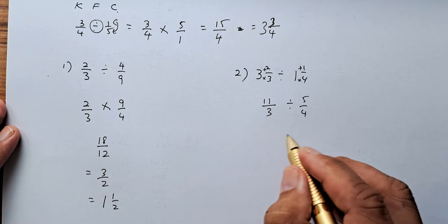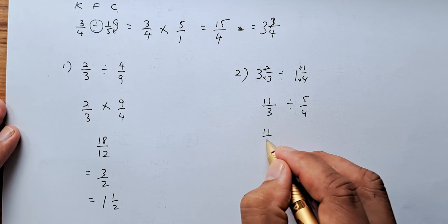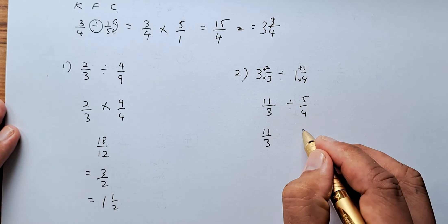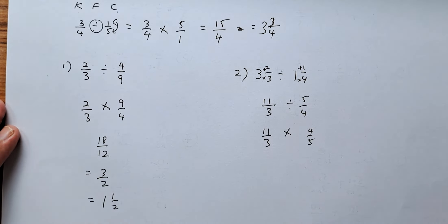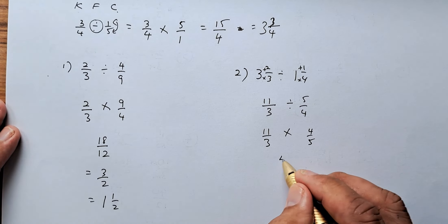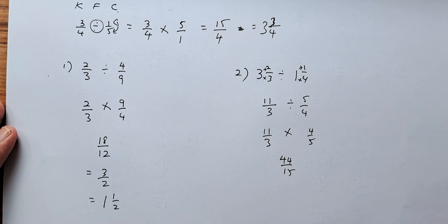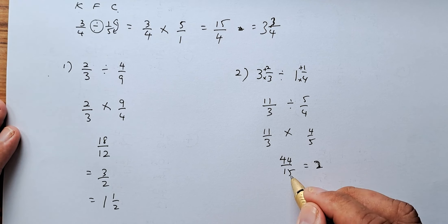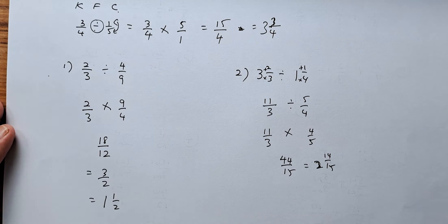Next step, you need to keep, flip, and change. So keep 11 over 3. Flip, you're going to be 4 over 5. And you change divide to multiply. Then you're going to simplify it to 44 over 15. And that is going to be 2, 14 over 15. Yep, that's right. Cheers, everyone, and have a good day.